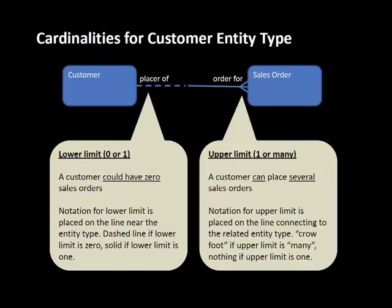The dashed line indicates the lower limit for customer. A dashed line means zero — it's possible that a customer may have zero sales orders. A solid line would say a customer must have at least one sales order. So dashed or solid tells us the lower limit. The upper limit is put on the opposite entity and could be one or many.